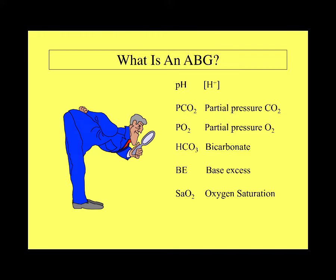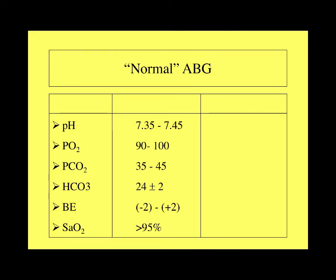When you receive results from an arterial blood gas, you'll get pH, PCO2, PO2, bicarbonate, base excess (BE), and oxygen saturation. All this data is presented in the ABG, and often electrolyte values are included as well. Normal values: pH 7.35–7.45, PO2 90–100 mmHg, PCO2 35–45 mmHg, bicarb 24 ± 2, base excess −2 to +2, and SaO2 greater than 95% breathing room air.